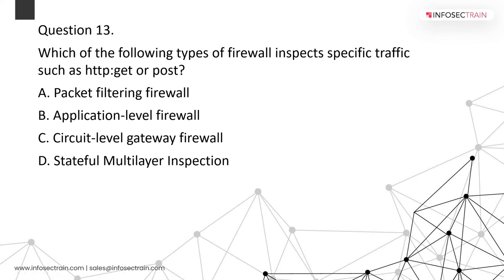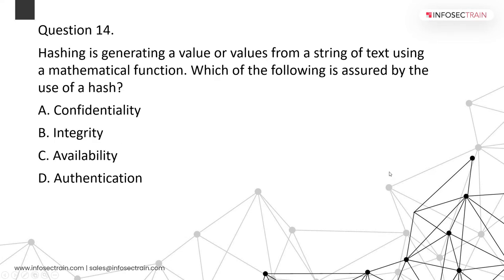Which type of firewall inspects specific traffic such as HTTP GET or POST? The answer is an application layer firewall. Proxies are also filtered. The application layer firewall of the OSI model performs inspection on specific traffic such as GET, POST, or HTTP.